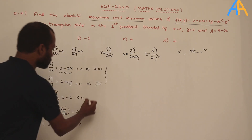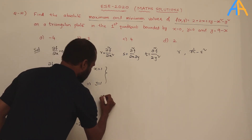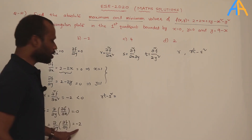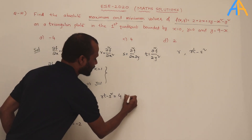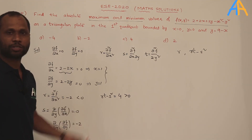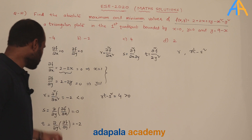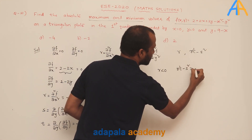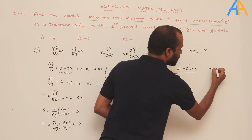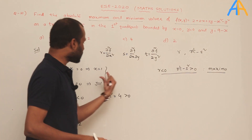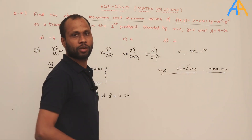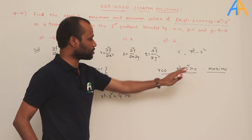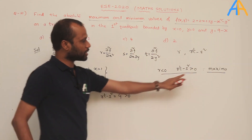Now compute rt − s²: (−2)(−2) − 0² = 4, which is greater than 0. Since rt − s² > 0 and r < 0, maxima exists. If r > 0 with rt − s² > 0, minima would exist. So at (1, 1), we have a maximum. The maximum value is f(1,1) = 2 + 2(1) + 2(1) − 1² − 1² = 4.